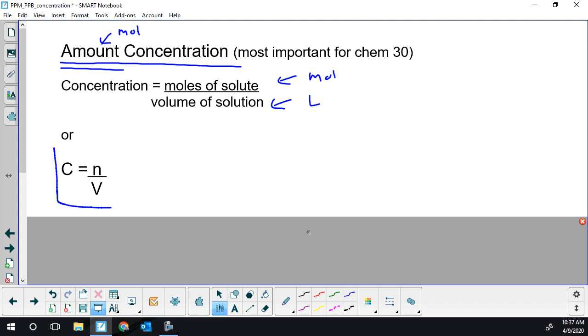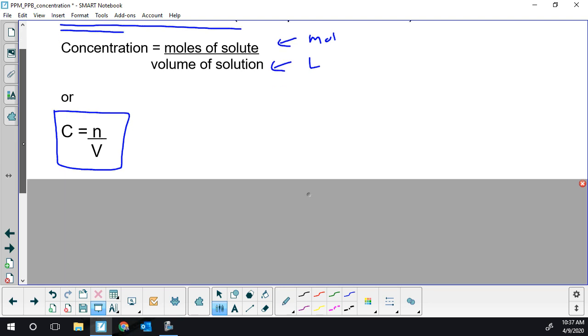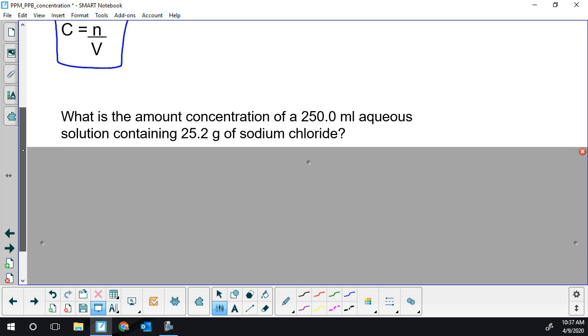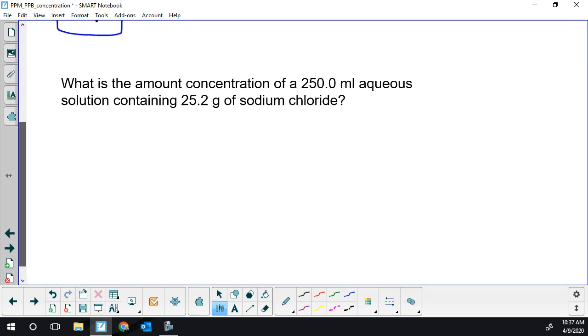Expressed as a formula using singular letters, concentration equals n divided by V. I'm going to go through two examples in this lesson. The first example: what is the amount concentration of a 250 ml aqueous solution containing 25.2 grams of sodium chloride?